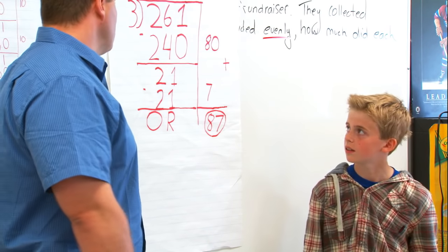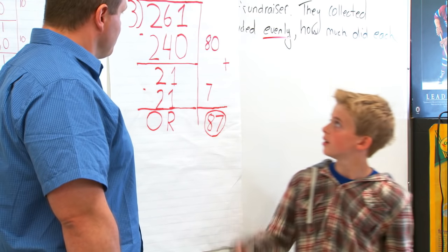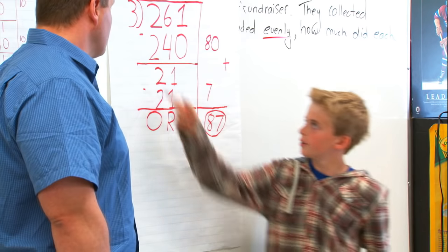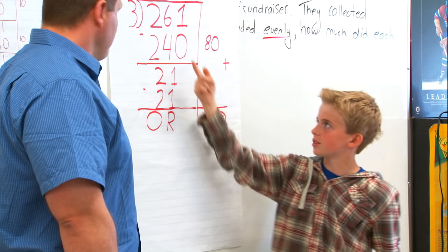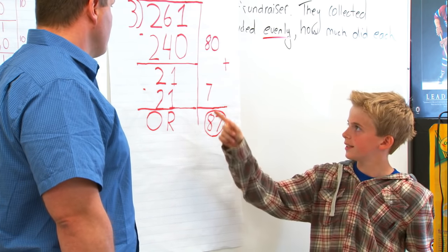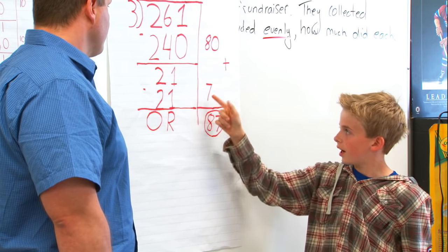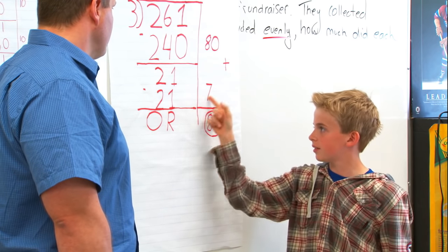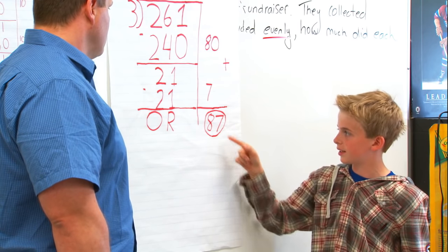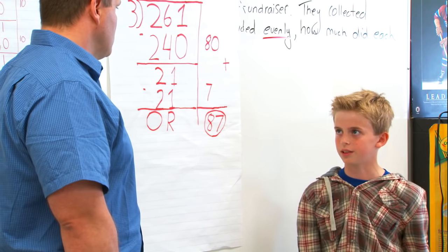This looks awesome, Griffin. Do you want to explain to the class how you solved your problem? Sure. I used 80 and 7. I know that 3 times 80 is close to 261, so I used 3 times 80 to get 240, which brought me to 21. I know that 3 times 7 is 21, which gave me zero remainder. So 80 plus 7 is 87 — each team got $87.